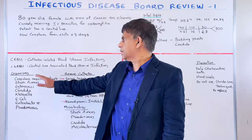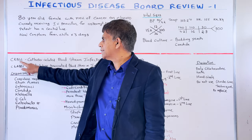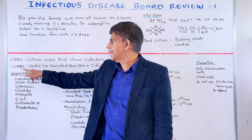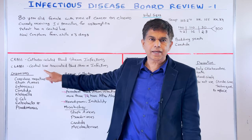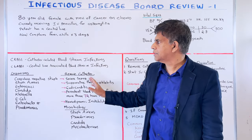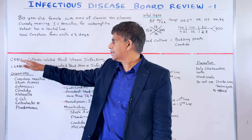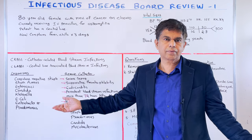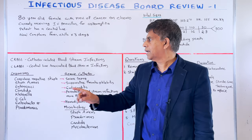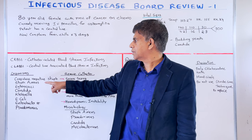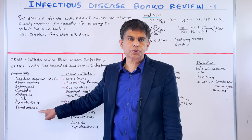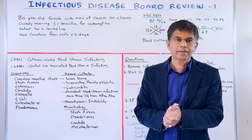Let's clarify the definitions. CRBSI stands for catheter-related bloodstream infection — this applies to any kind of catheter, including urinary catheters. CLABSI stands for central line-associated bloodstream infection, which is what this case represents. The most common organisms in CLABSI include coagulase-negative Staphylococcus, Staphylococcus aureus, Enterococci, Candida, Klebsiella, E. coli, Enterobacter, and Pseudomonas.